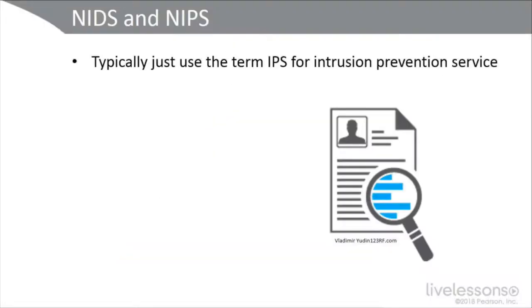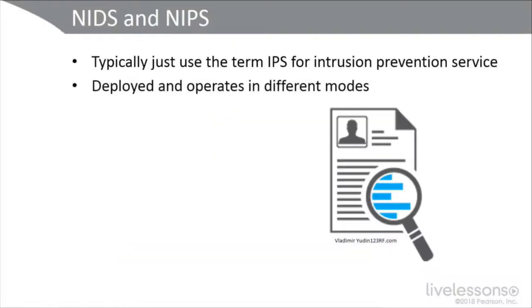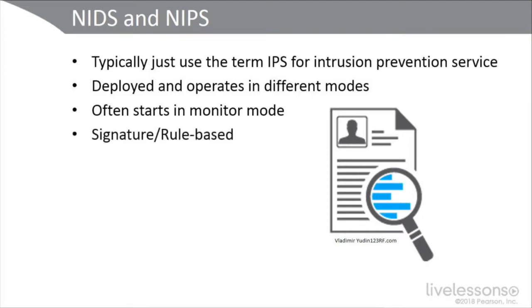Traditionally we would call IDS promiscuous mode — sniffing copies of traffic, maybe from a span port on a switch or a network tap. Then you have inline mode — out of band versus in band. Even if you're going to deploy an IPS sensor inline, you're usually going to begin in monitor or passive mode so that you can optimize your deployment, and then when you're ready, put it into inline mode.